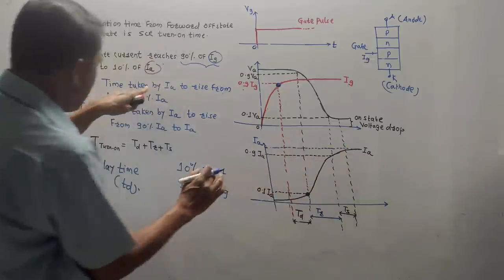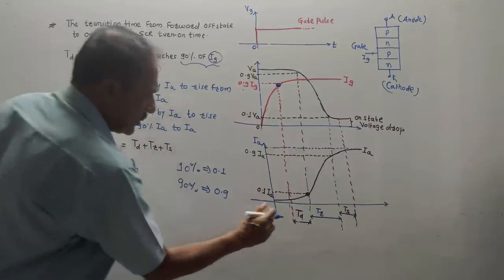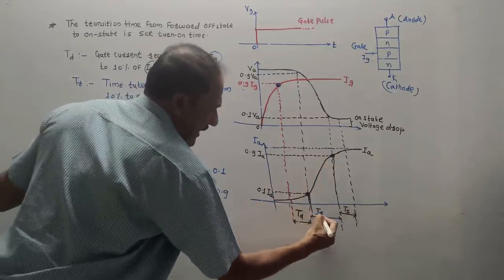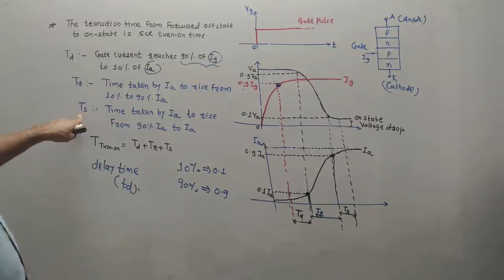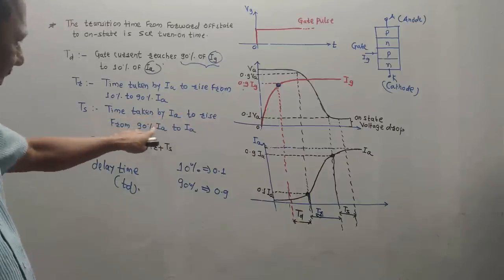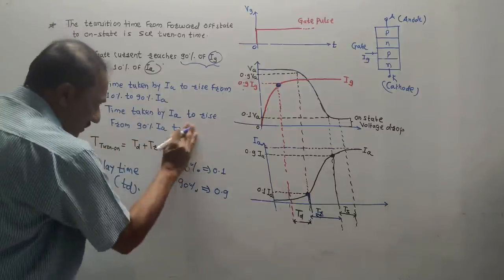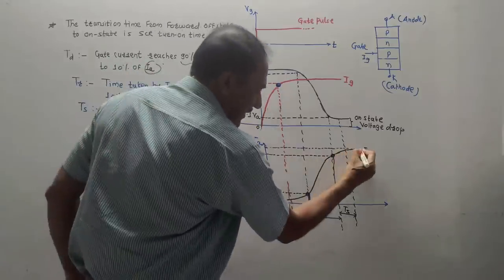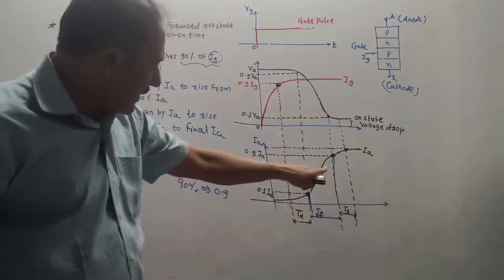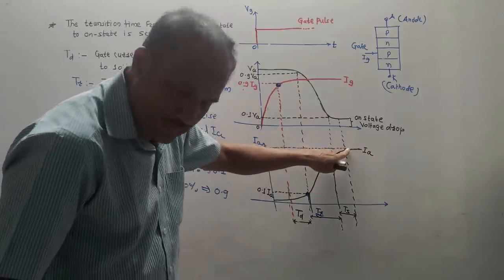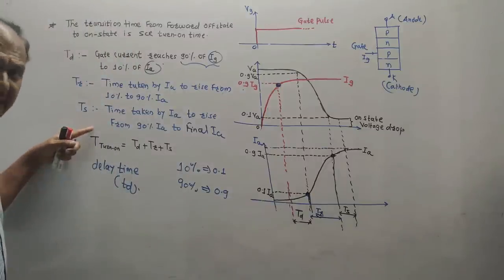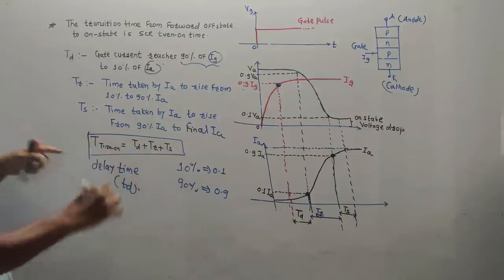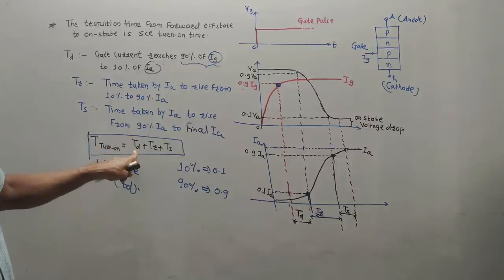Rise time tr is the time taken by IA (anode current) to rise from 10% to 90% of its final value. So from 0.1 IA to 0.9 IA — this time period is tr. Settling time ts is the time taken by IA to rise from 90% of IA to the final value (100% IA). So from 0.9 IA to the final IA — this time period is ts. Total turn-on time = td + tr + ts.